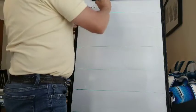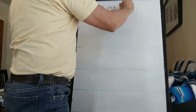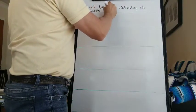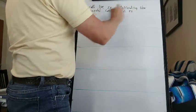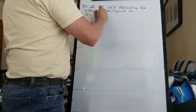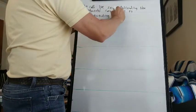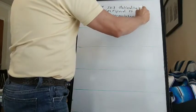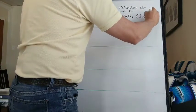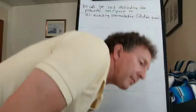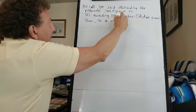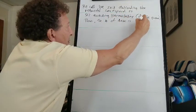Recall we said that descending star networks correspond to 3-1-2 avoiding permutations. Now we didn't actually prove this, but it's true. So it follows that the number of these is the Catalan number, 1 over n plus 1, 2n choose n.